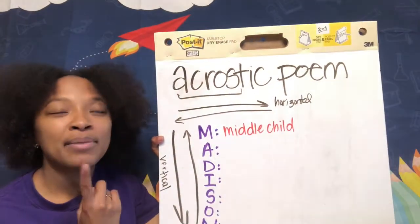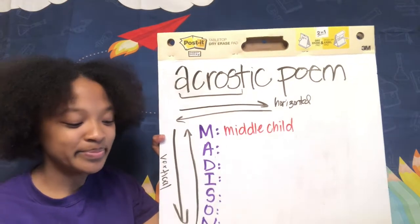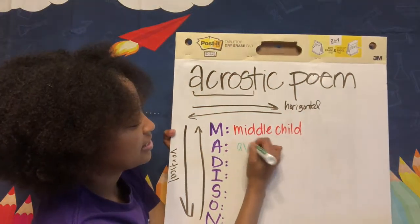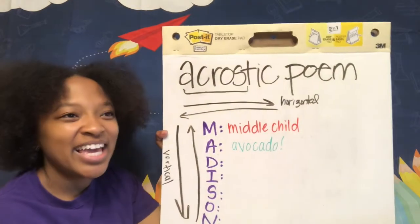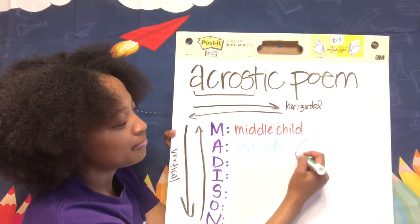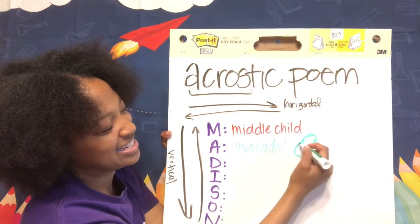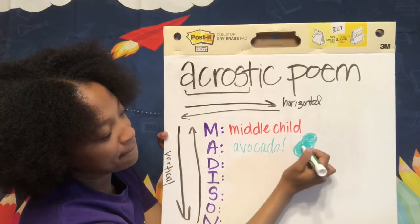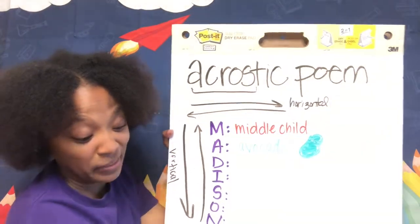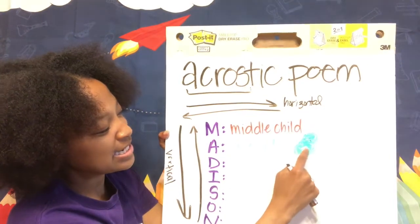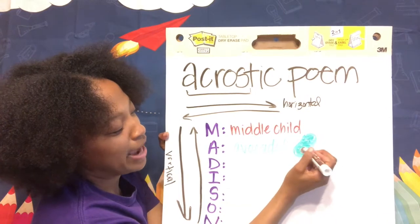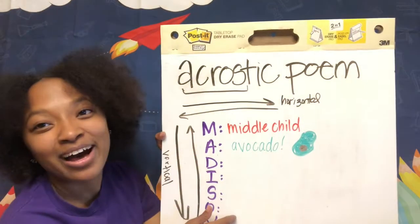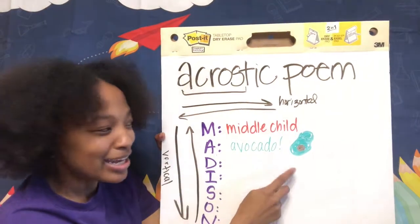Now what about the letter A? I'll say avocado — I love avocados! Now if you haven't had avocado before, it's a fruit — or some people say it's a vegetable — and it's green, kind of looks like this. I am not an artist, which is why I didn't draw that there. If you've ever had guacamole, avocado is in guacamole. There's a big seed in the middle that's brown. Next time you go to the grocery store you should ask to see an avocado.